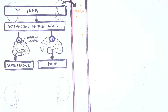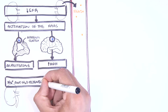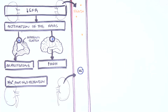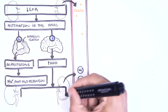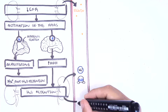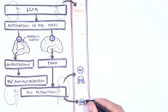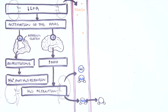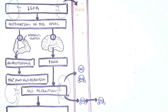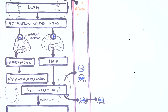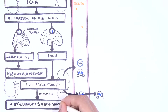Aldosterone will reabsorb sodium and water. Antidiuretic hormone attempts to increase glomerular filtration rate by increasing intravascular volume with water. This all results in hypervolemic hyponatremia through dilution.